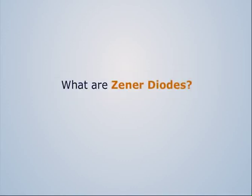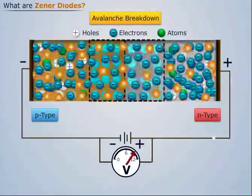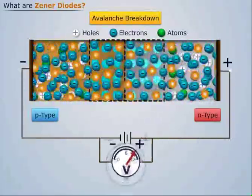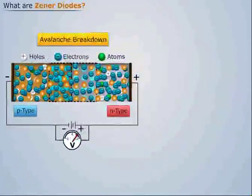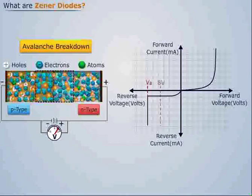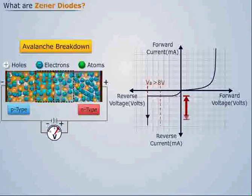What are Zener diodes? We have studied that avalanche breakdown occurs in a reverse biased diode when a high reverse biased voltage is applied. It is mainly observed in diodes having a breakdown voltage greater than 8 volts and it causes a steep increase in the reverse current levels.